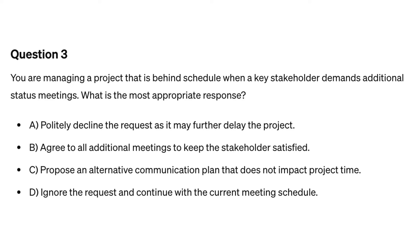Question three. You are managing a project that is behind schedule when a key stakeholder demands additional status meetings. What is the most appropriate response? A. Politely decline the request as it may further delay the project. B. Agree to all additional meetings to keep the stakeholders satisfied. C. Propose an alternative communication plan that does not impact project time. D. Ignore the request and continue with the current meeting schedule.